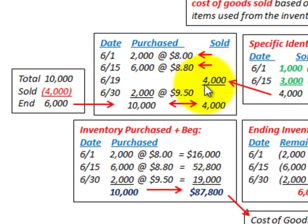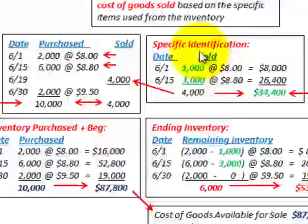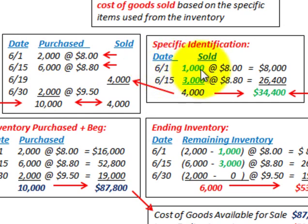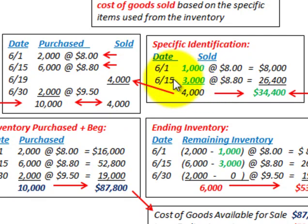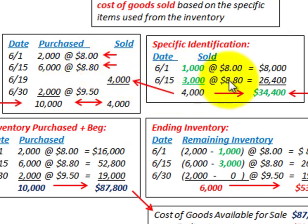Now we'll focus on these 4,000 units that are sold and identify which inventory items we used for those sales. For the June 1st purchase, we're going to sell 1,000 of those units at their specified price of $8 per unit, which gives us $8,000. Then for the June 15th purchase, we're going to specify that we sold 3,000 of those units at $8.80 each, giving us a value of $26,400.